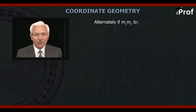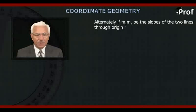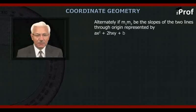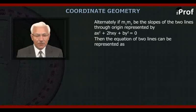Ultimately, if m₁ and m₂ be the slopes of the two lines through origin represented by Ax² + 2Hxy + By² = 0, the equation of the two lines can be represented by y - m₁x = 0 and y - m₂x = 0.